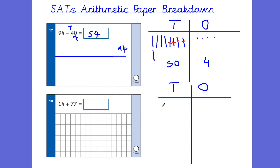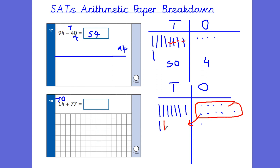Question 18: 14 plus 77. Make the bigger number first: 77 is seven 10s and seven 1s. Adding 14: one ten and four ones. Do we need to carry a ten? Counting the ones — seven plus four gives eleven, so yes, we've made a new ten. Draw a circle around the new ten, move it into the tens column, leaving one over. We now have nine tens (90) and one one, giving a final answer of 91. The children must go through this process to see they've crossed that tens barrier.